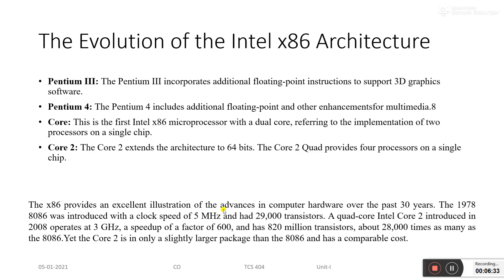The x86 provides an excellent illustration of advances in computer hardware over 30 years. In 1978, the 8086 was introduced with a clock speed of 5 megahertz and had 29,000 transistors. The Intel Core 2, introduced in 2008, operates at 3 gigahertz — a speed increase by a factor of 600 — and has 820 million transistors, about 28,000 times as many as the 8086. Today, a billion transistors can be found on a single chip.